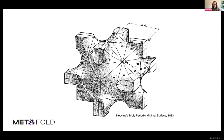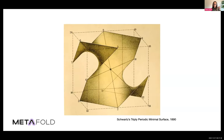My point with these pictures — and I'm going to share another image from Schwartz — is that this is the extent of what existed in the 1800s on minimal surfaces. These mathematicians thought these things up and proved they existed. There's a very precise mathematical definition, and the mathematicians proved that these surfaces existed but had no way to make them material. So we knew they existed, but they were just an abstract mathematical concept.